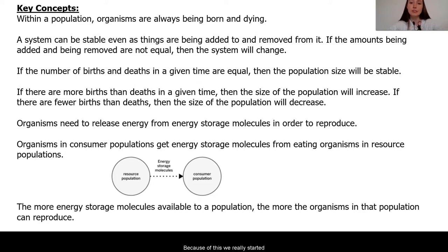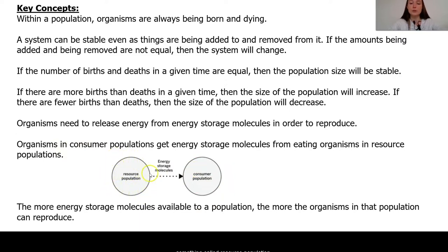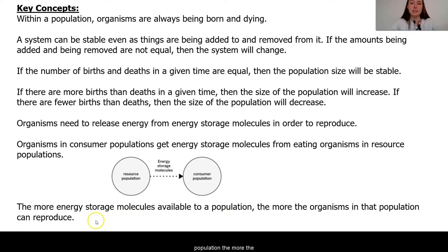Because of this, we really started diving in to what might be affecting either side of the ratio. We figured out that organisms in a population need to release energy from energy storage molecules in order to reproduce, or in other words, give birth. Organisms in these consumer populations get their energy storage molecules from eating something called resource populations. Some organisms can make their own energy, but most need to eat to get these energy storage molecules. The more energy storage molecules available to a population, the more the organisms in that population can reproduce. We saw this with the yeast, with the crickets, and also with the organisms in the digital model.